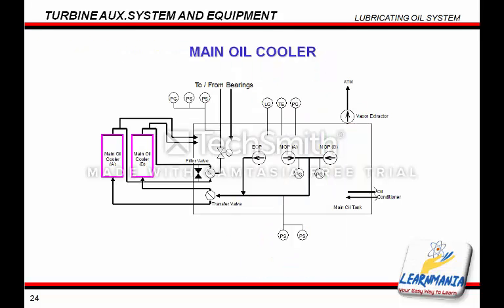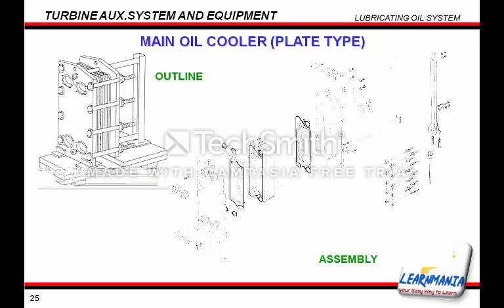Two main oil coolers are provided, one being a standby which can be activated using the cooler transfer valve. The procedure is as follows: first open the filler valve and check the vent of the standby cooler to ensure there is sufficient lubrication oil. Open the cooling water flow to the standby oil cooler. Unlock the transfer valve, then change the duty main oil cooler by turning the transfer valve handle, and re-lock the transfer valve. Finally, stop the cooling water flow to the original duty oil cooler and close the filler valve. Presently, there are two types of main oil coolers being used by Toshiba. This diagram shows the assembly of the first type. Oil flows in through the holes on the upper and lower left-hand side, and the holes on the right are for cooling water flow.